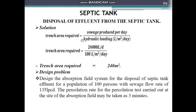Next, the trench area required is calculated as: sewage produced per day divided by hydraulic loading. Trench area = 24,000 liters/day ÷ 100 liters/m²/day = 240 square meters.